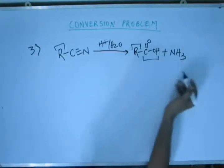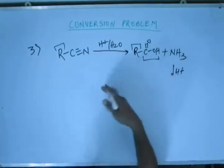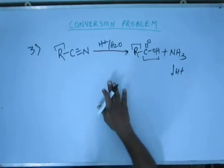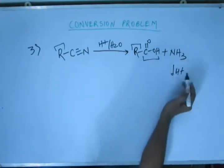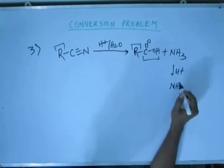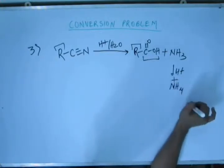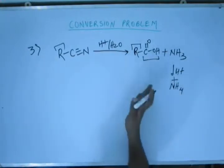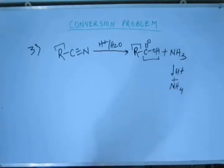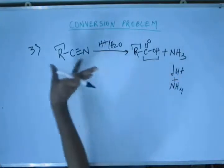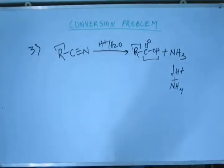If there is more H+ present — H+ being an electron acceptor and ammonia being an electron donor — there will be a reaction between ammonia and H+, forming a coordinate bond between nitrogen and hydrogen, resulting in ammonium ion. So if more H+ is available after hydrolysis, ammonia will exist as ammonium ion. Either way, you get carboxylic acid from cyanide — a very familiar reaction we have used throughout the course. Now we are finally going to see its mechanism.